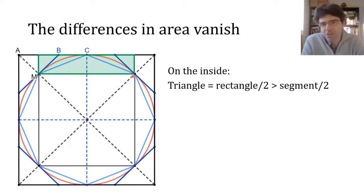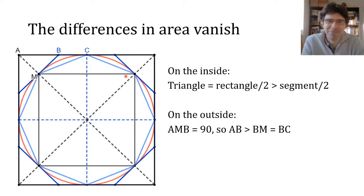And on the outside, we'll talk about the leftover bits that the circle doesn't fill up in the corners of the circumscribed polygons. So if we look at A, M, B, this is a right angle because tangents make right angles to the radius. So that means that A, B is a hypotenuse, and so it's going to be more than M, B.